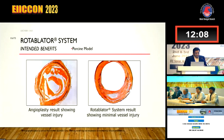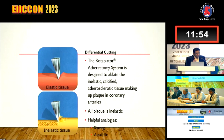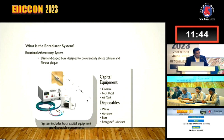We shouldn't be fearing rotablation if you know the basics and how to perform it. It works just like an electric razor. When we shave, it cuts our hair but doesn't cut the skin. That is how rota works. When it encounters elastic tissue, it doesn't cut it. When it encounters inelastic tissue, it cuts through. That is why it cuts the calcium and fibrotic plaque but seldom cuts the intima.